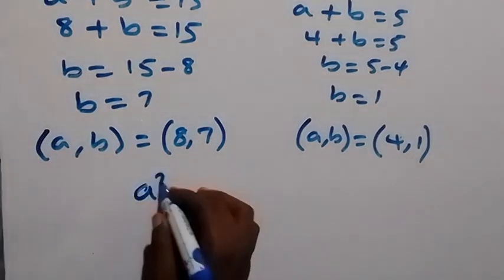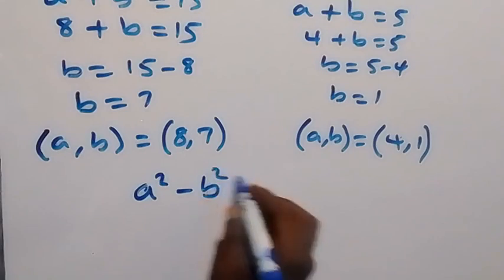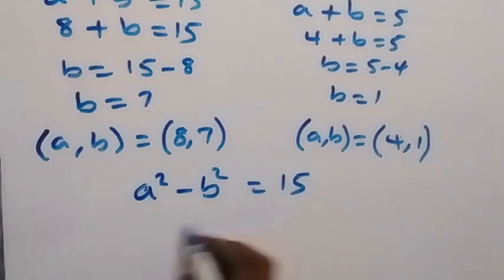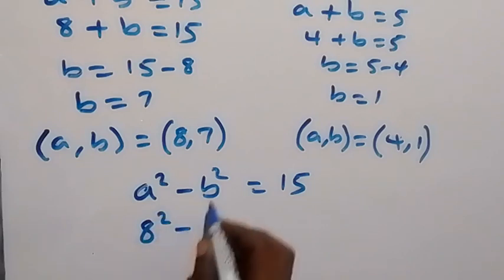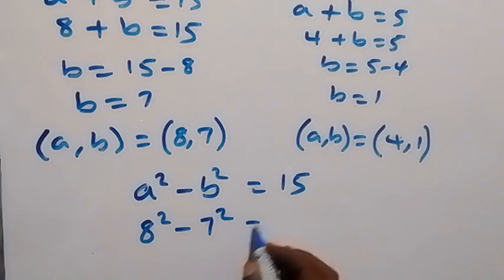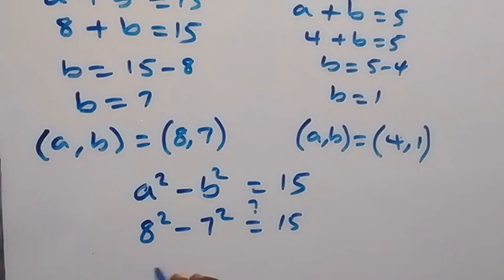We are given a²-b² = 15. For a = 8 and b = 7, we have 8²-7² = 15. So 64 - 49 = 15.